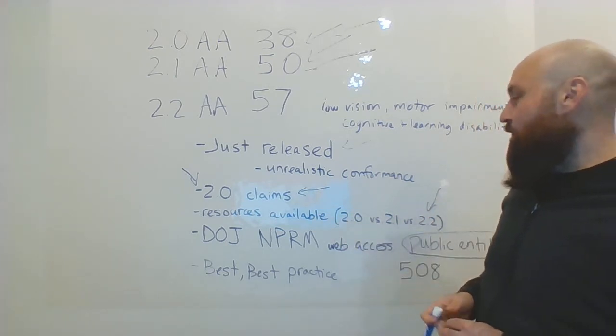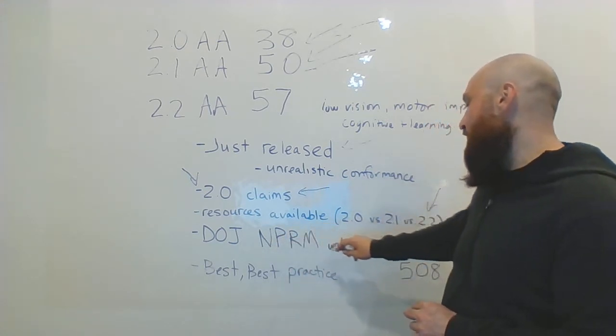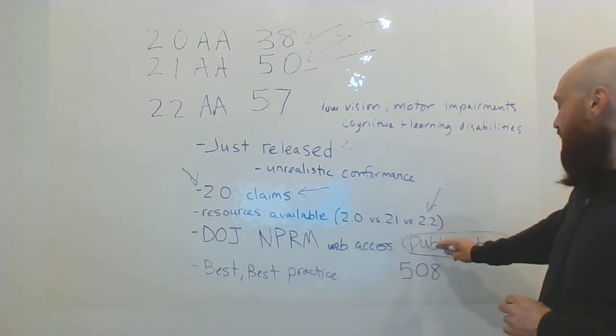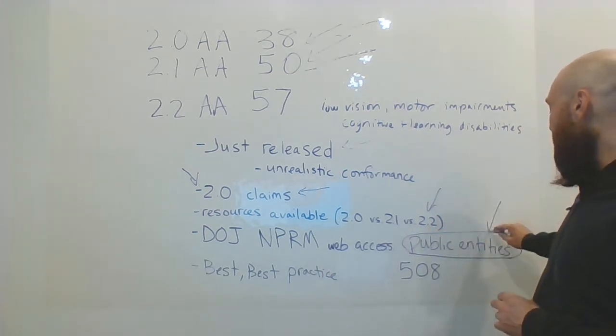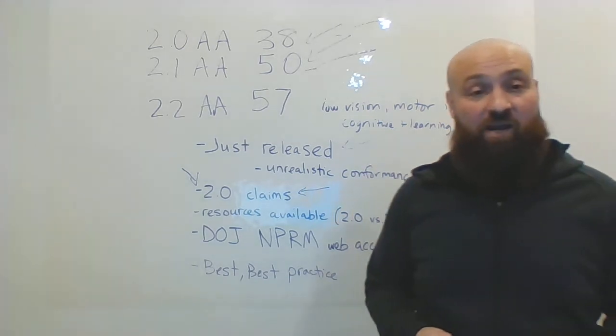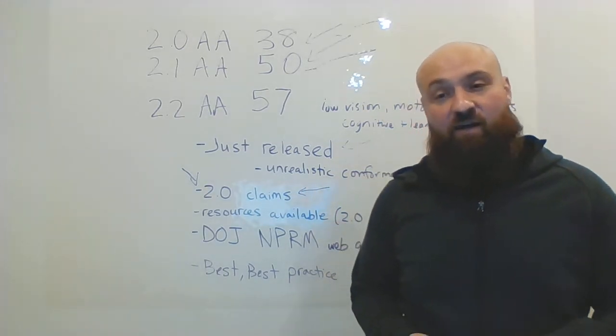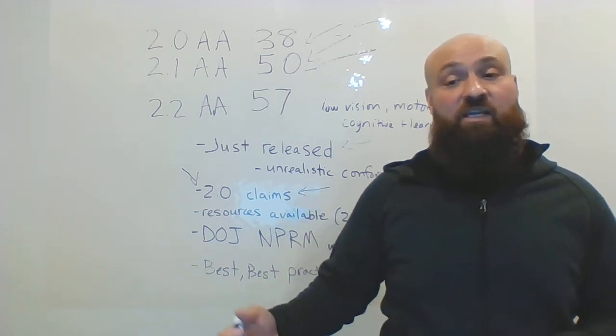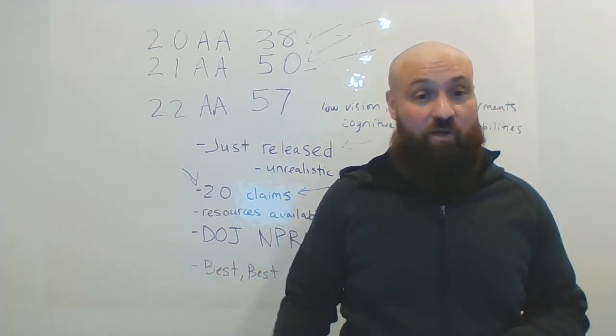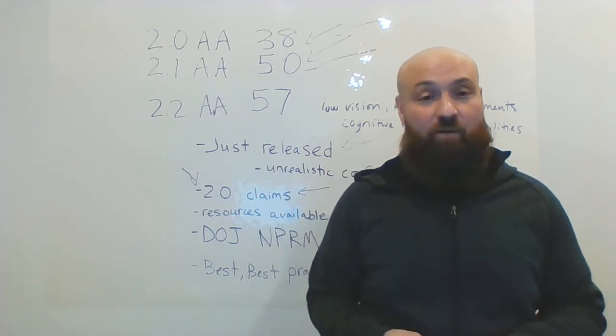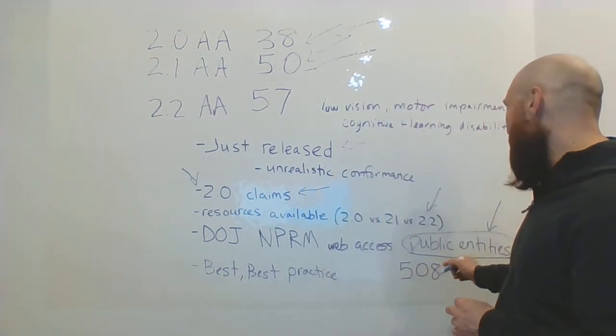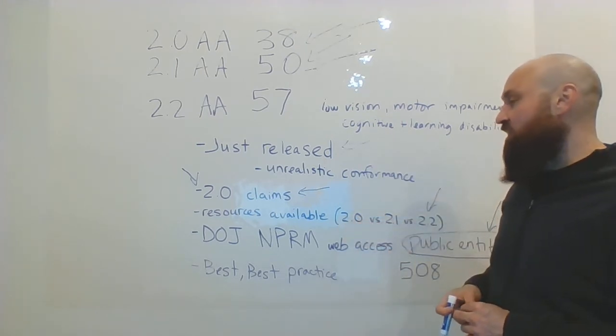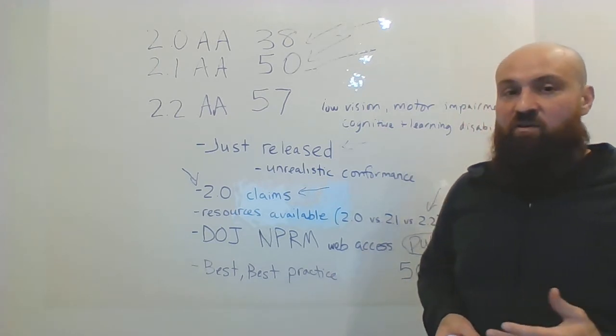The DOJ intends to publish a notice of proposed rulemaking for website accessibility in 2023, and this is for Title 2 of the ADA, so for public entities. The significance there is that even if you are a private entity, this regulation for Title 2, there's a really good chance there will be a follow-up for Title 3 which will apply to private entities. So you'll want to pay real attention to this.